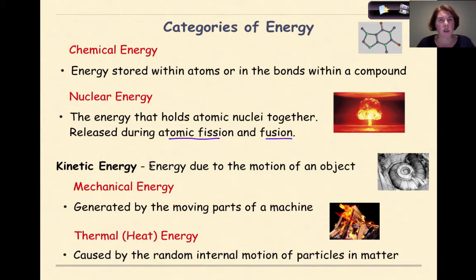So we have potential energy as stored energy, and then we have kinetic energy. Kinetic energy is defined as energy due to the motion of an object. The first type is mechanical energy, generated by the moving parts of a machine. Or thermal heat energy caused by the random internal motions of particles in matter, and we can see that with this fire right here.